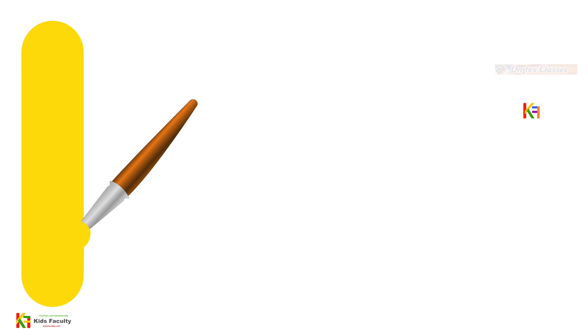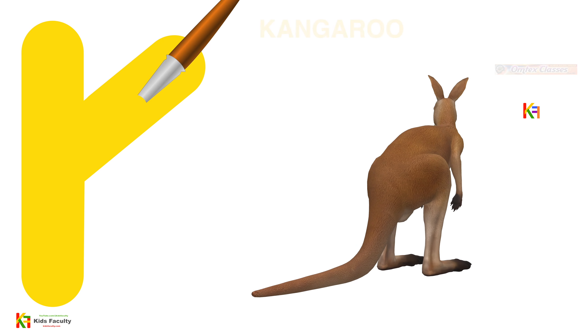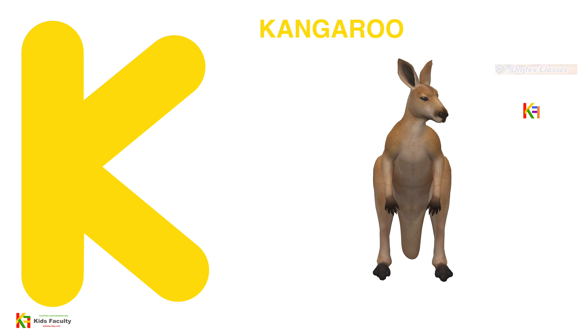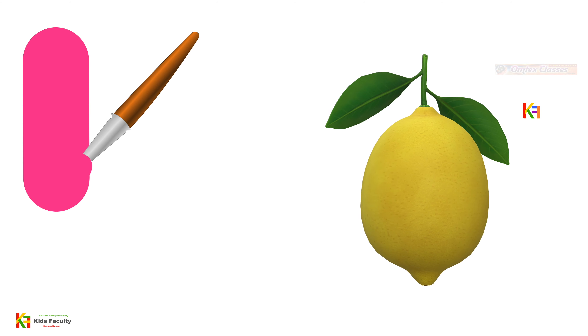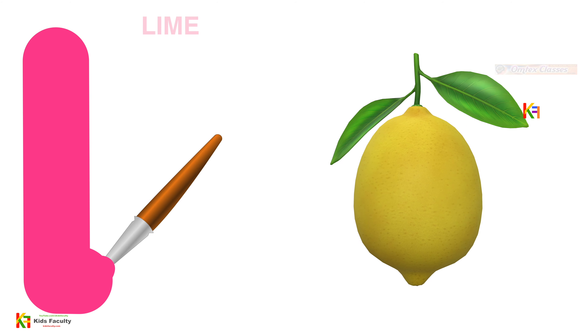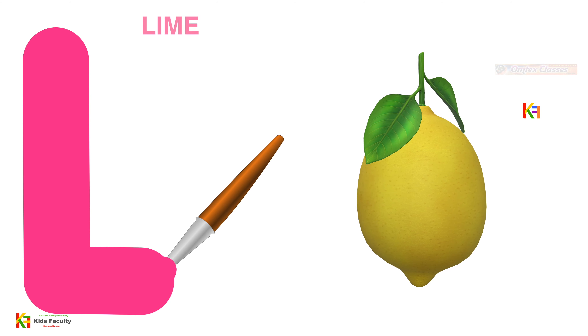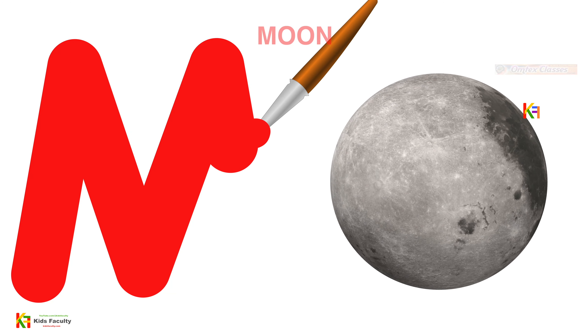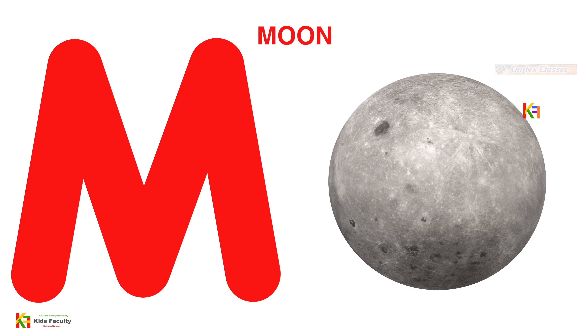K for kangaroo, L for lime, M for moon, N for Neptune.